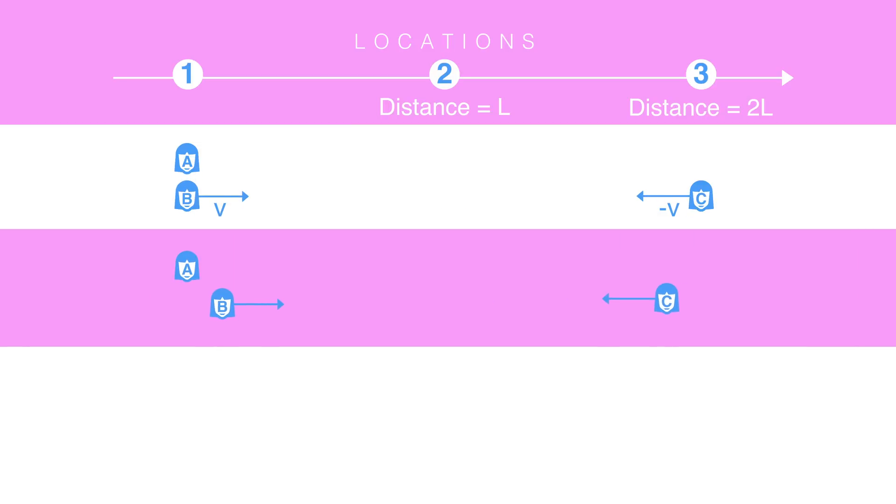So here's what we're going to do. When we start the experiment, all three observers are going to start a stopwatch. When observer B and C cross paths at the center, observer B holds up a big digital clock that observer C can read. That clock records how long it took for observer B to go from location one to location two. Observer C also writes down the time they see on their own stopwatch as they cross location two.